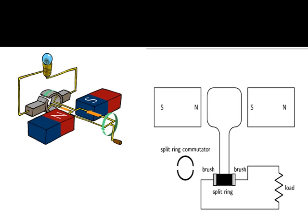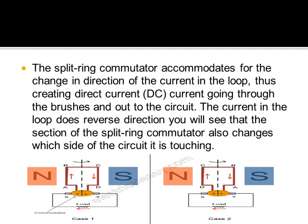اللي يحرك الملف، طاقة حركية داخل الملف، يقطعه، راح يتولد. هنانا، قدنا نفس الشيء في المخطط، Two Brushes وينصيح لهن الـ Split Ring، إذن الـ Commutator هو الـ Split Ring. The Split Ring Commutator accommodates for the change in direction of the current in the loop thus creating direct current DC. Current going through the brushes، اللي هي الـ X و Y.